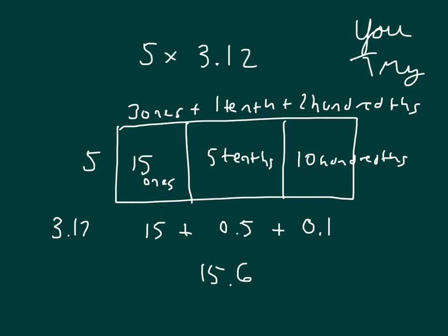Add those together I get 15.6. Solving it numerically: 5 times 2 is 10, 0 regroup the 1, 5 times 1 is 5 plus 1 is 6, 5 times 3 is 15, and I place my decimal point. And these two are equivalent, they have the same value. Read the whole sentence with me: 5 times 3 and 12 hundredths equals 15 and 6 tenths, or if you wanted to say 15 and 60 hundredths you could say that as well.